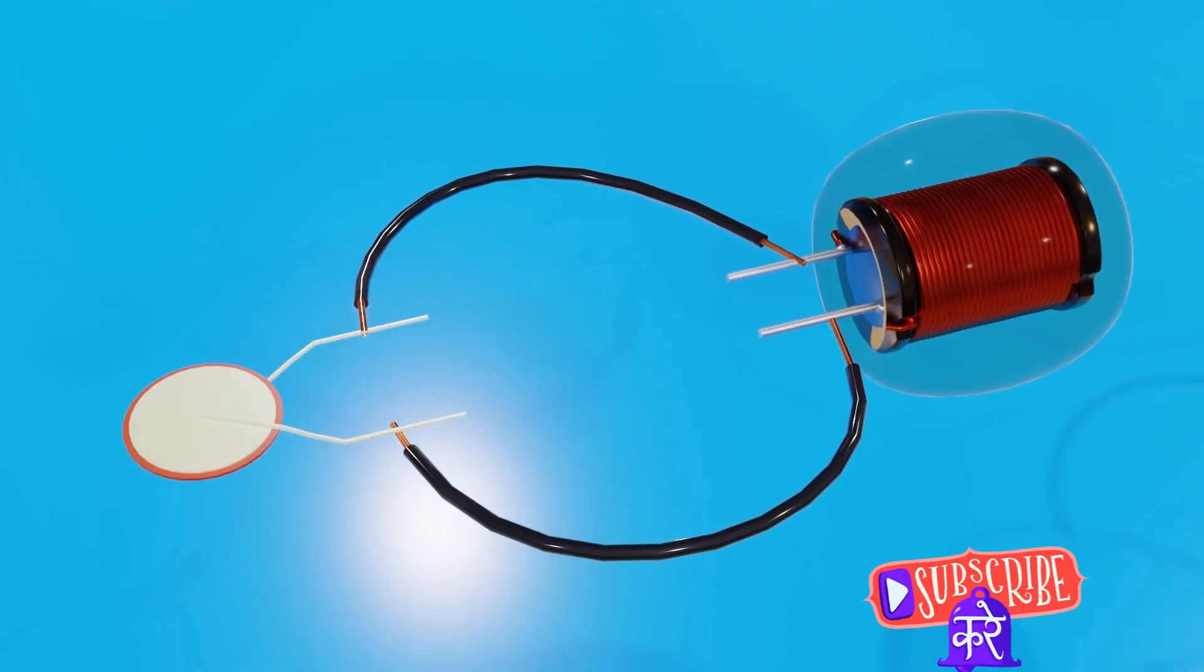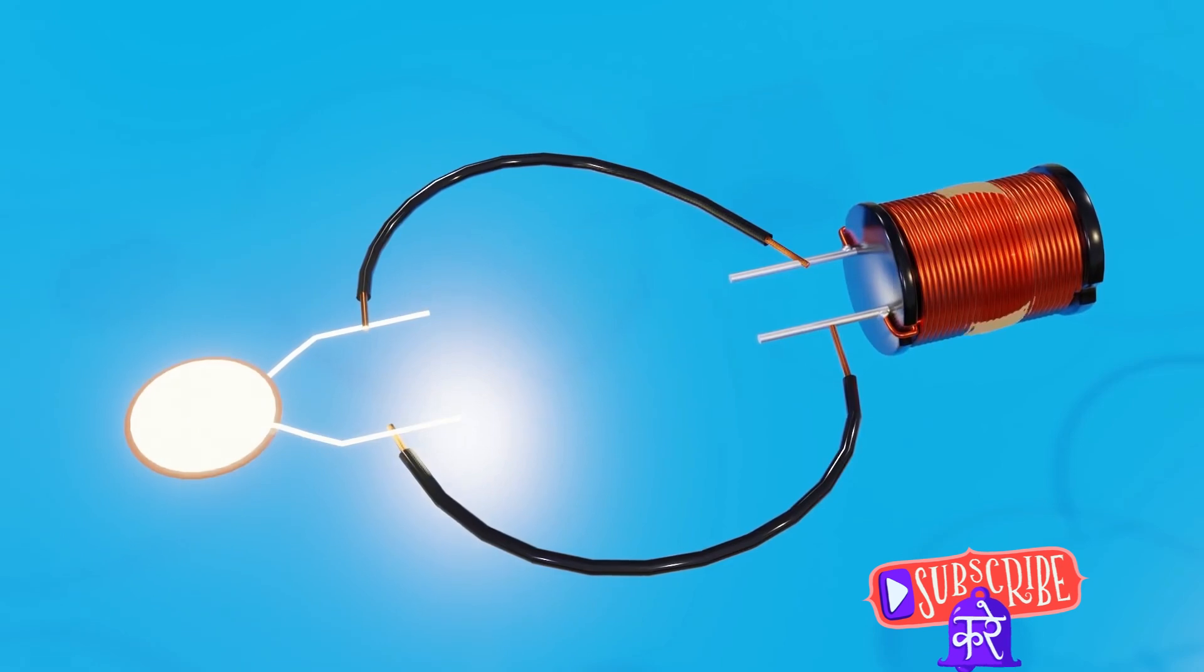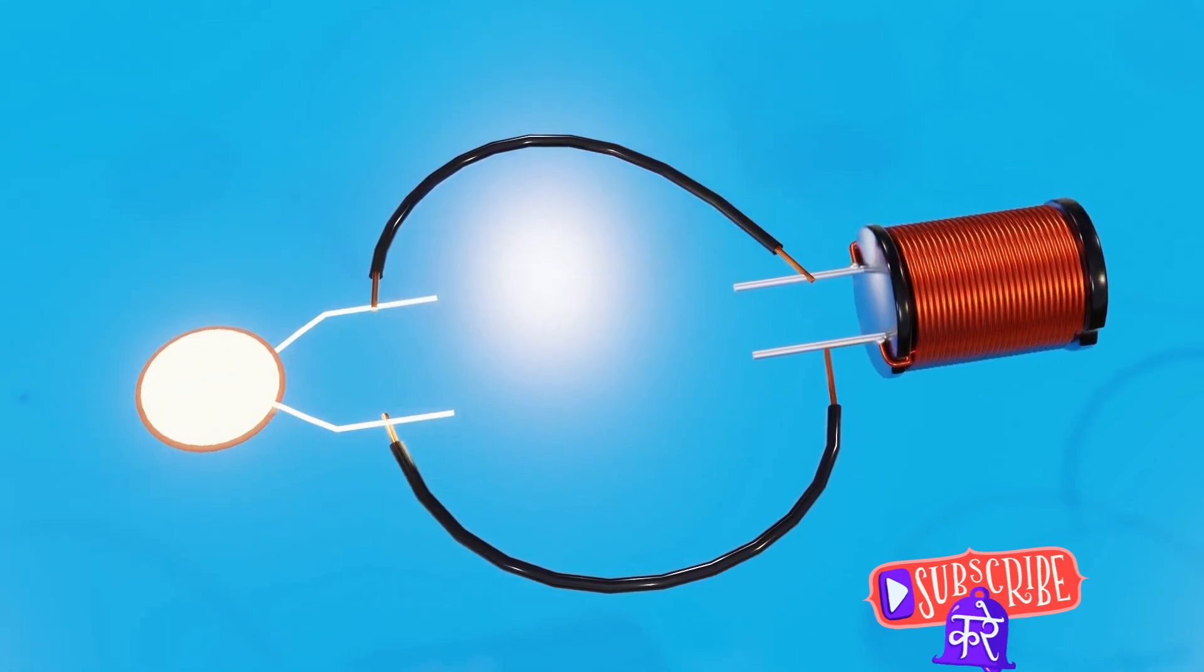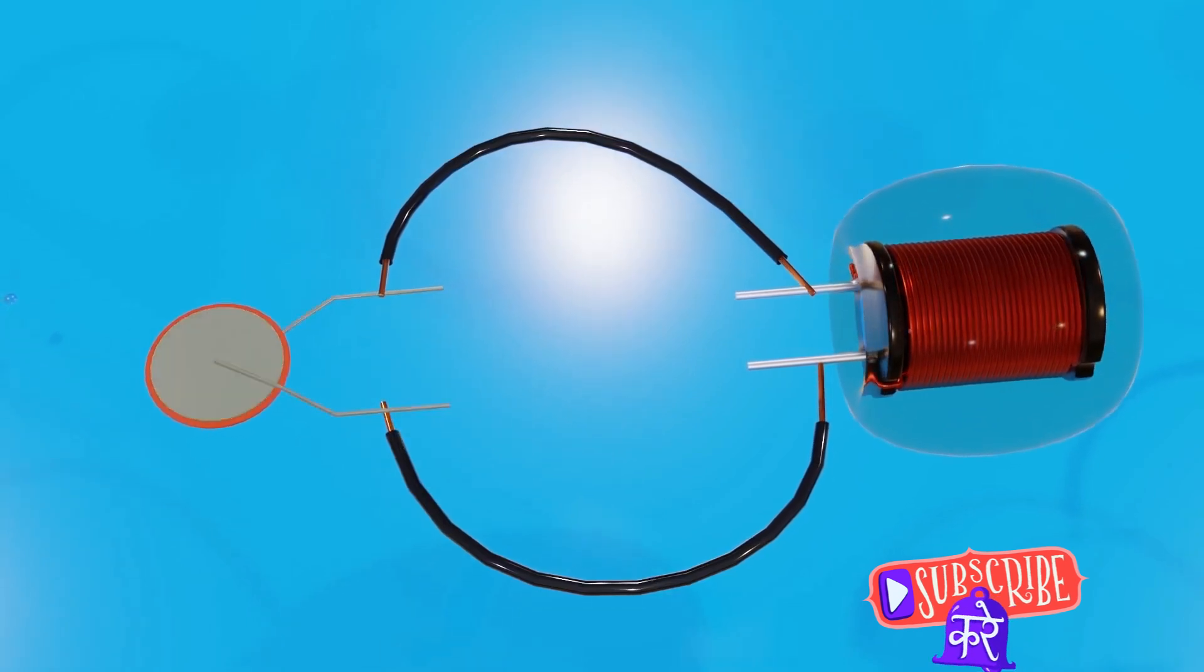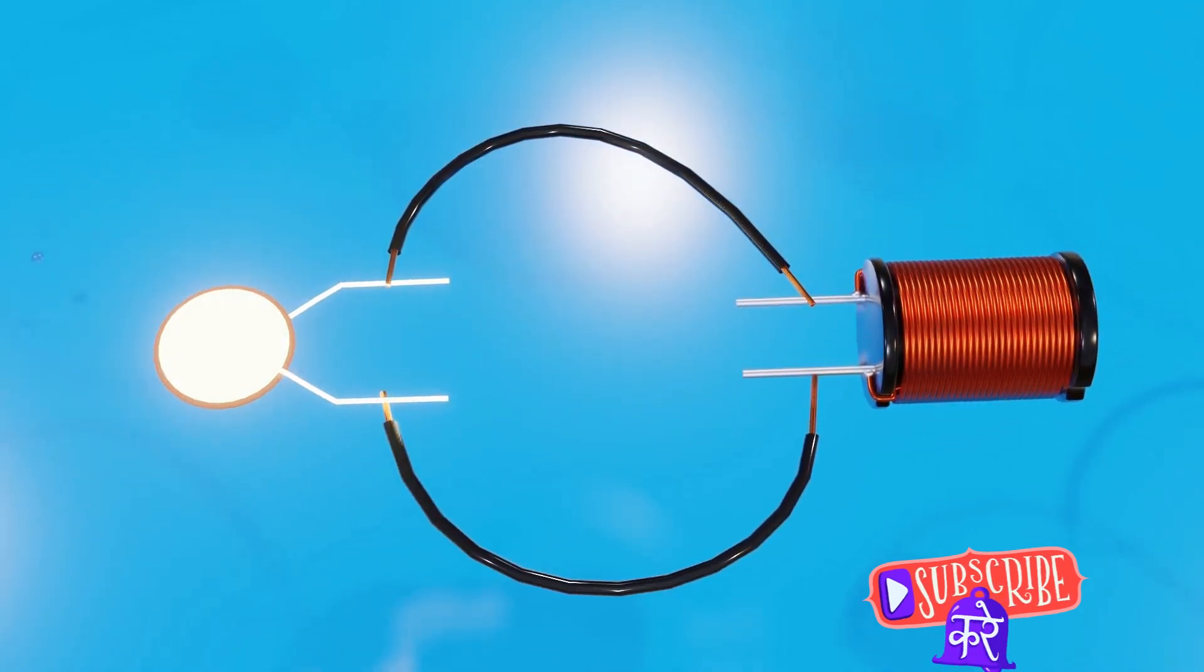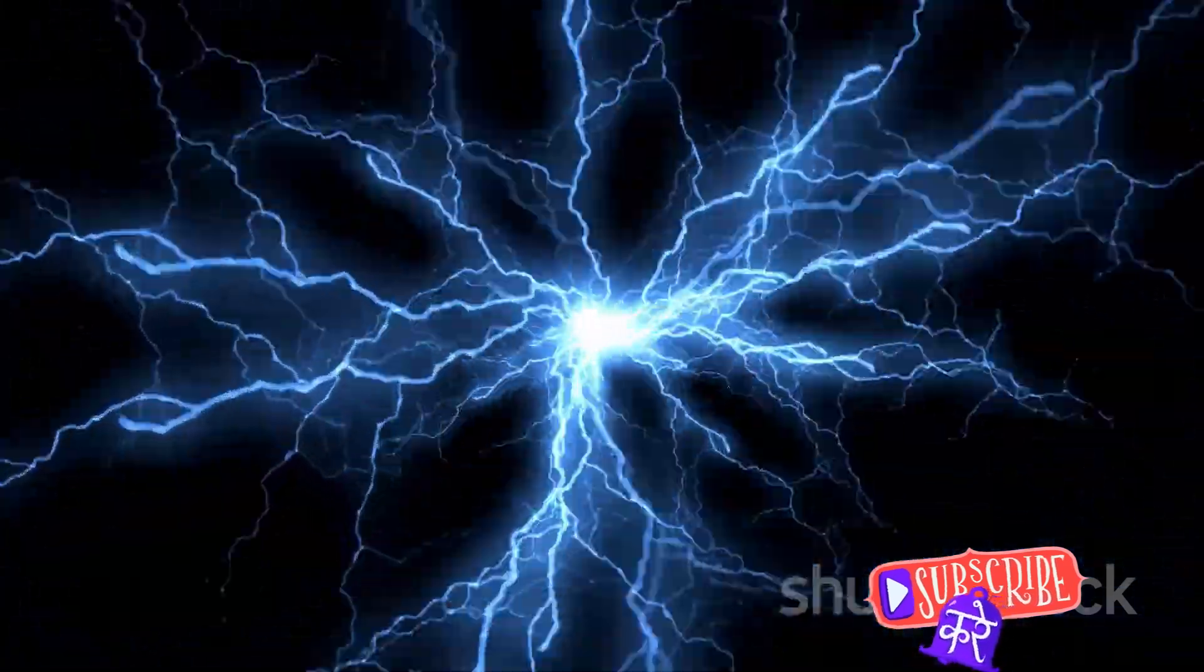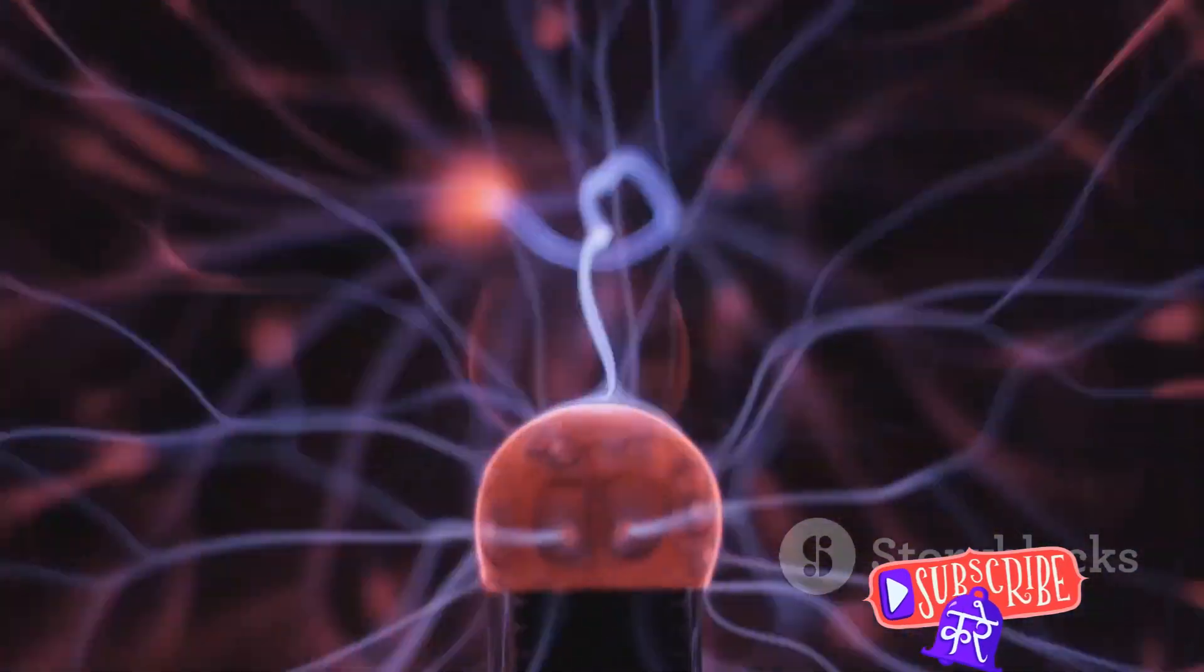So, in a way, we have a dance of energy occurring, with electricity and magnetism taking turns leading. The magnetic field created by the primary coil is not solely confined within the coil. It extends outward, reaching into the space around the coil. This is where the magic of the Tesla coil really starts to unfold.